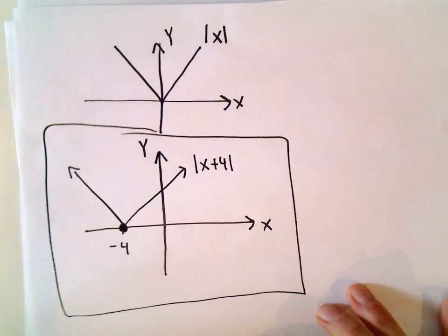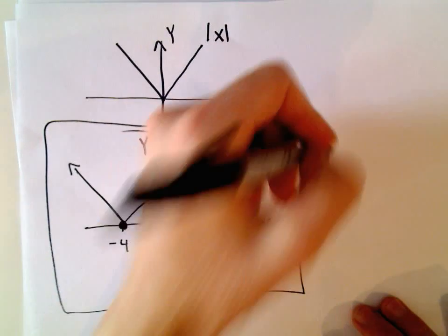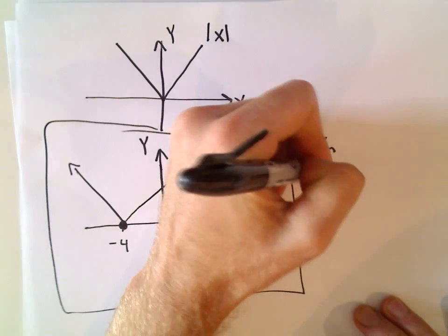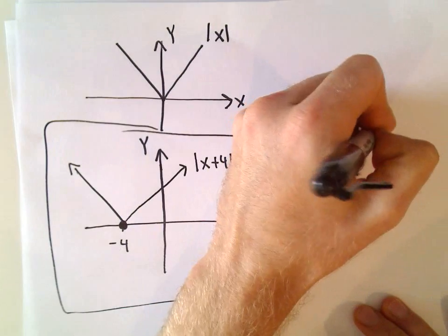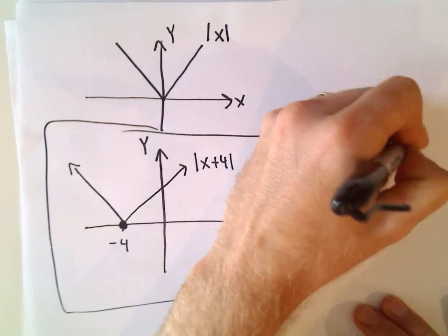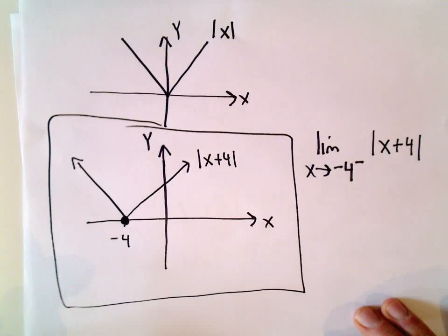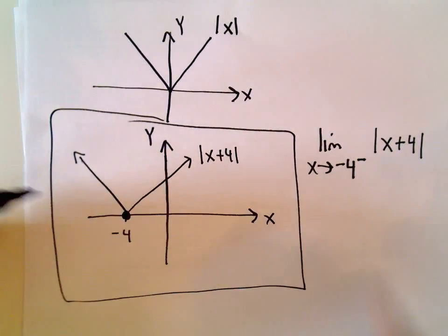Okay, so we're looking at this bottom graph, and we're thinking, what's the limit as x approaches negative 4 from the left of our function, the absolute value of x plus 4? Well, if you want to think about it in terms of a graph,